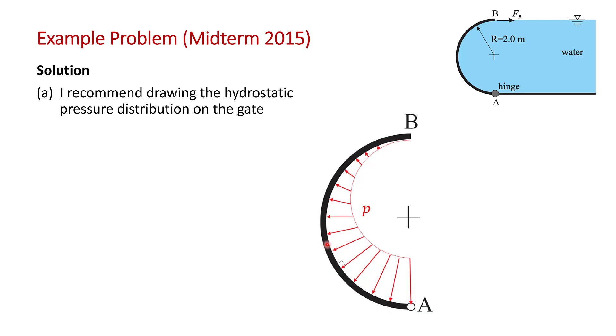Why would you draw this? Just looking at this distribution, this is the force of the water on the gate. We can see clearly that the horizontal force is going to be to the left. All of these arrows, except for this one at the bottom, they all have a horizontal component to the left.